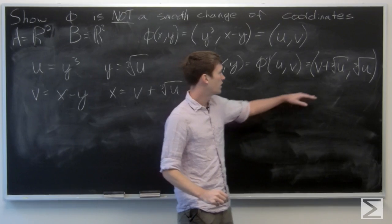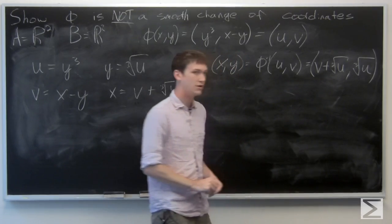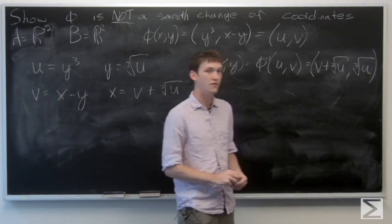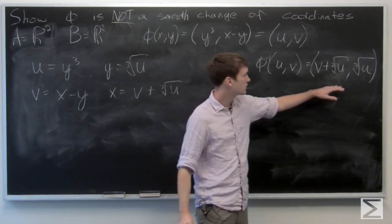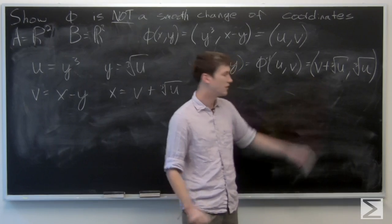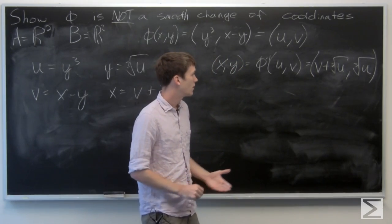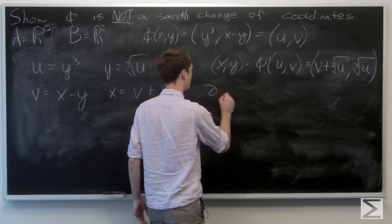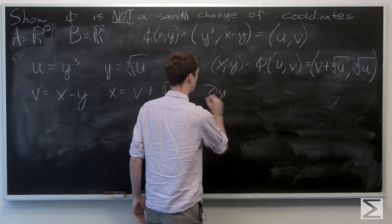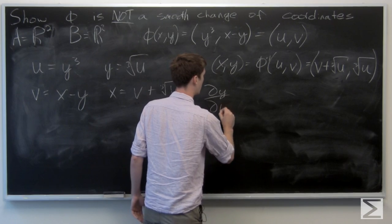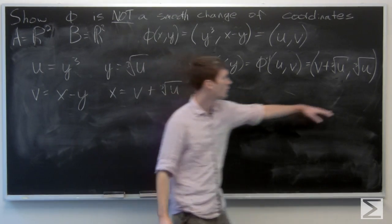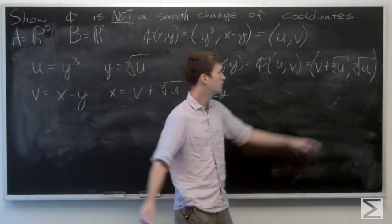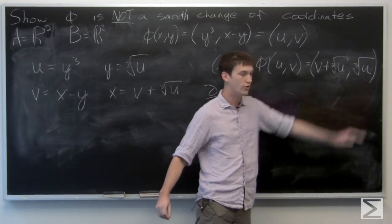We found that phi is a bijection, but we want to find points where the derivative doesn't exist. We know that v is infinitely differentiable, but we're not sure about u. So let's take the partial derivative of y with respect to u, which is the derivative of the cube root of u.